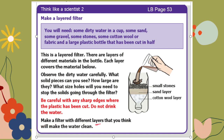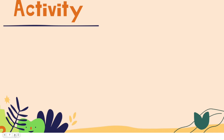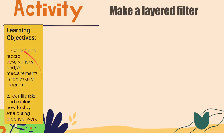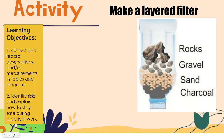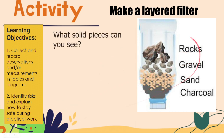You will make a filter with different layers that you think will make the water clean. We are going to record observations in tables and diagrams. In this activity, we can use different layers to make a filter to clean water. When you do this activity at home, please do not drink any of the water in this investigation and take care of any sharp edges where the plastic bottle has been cut.